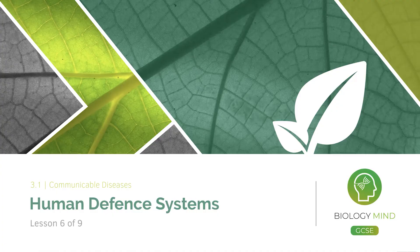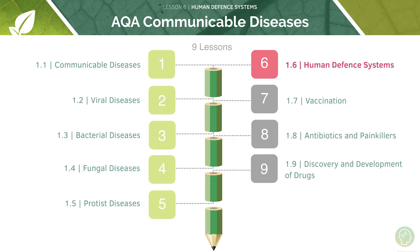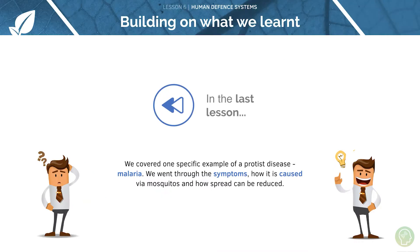Hello and welcome to tutorial six of nine in which we'll be looking at human defence systems. In previous tutorials we took a look at examples of viral diseases, bacterial, fungal and protist diseases. Do feel free to go back and recap on that before we move on to look at how our body can protect us against these various types of diseases.